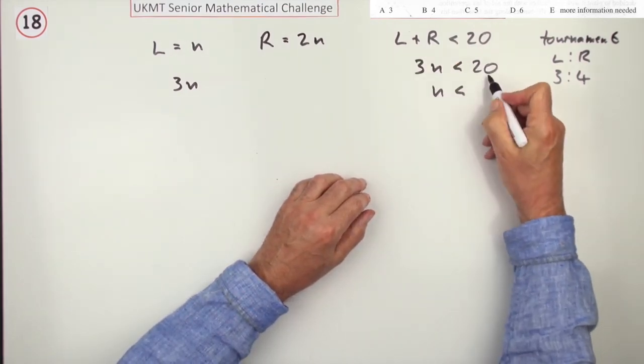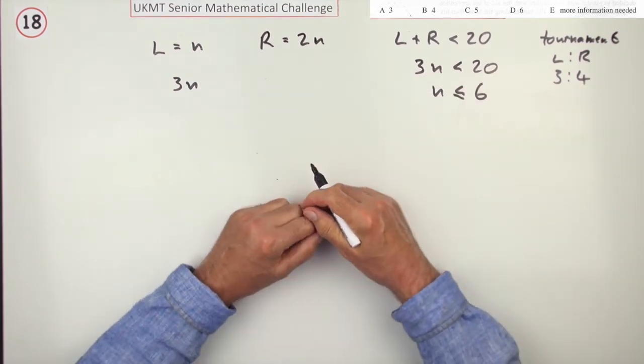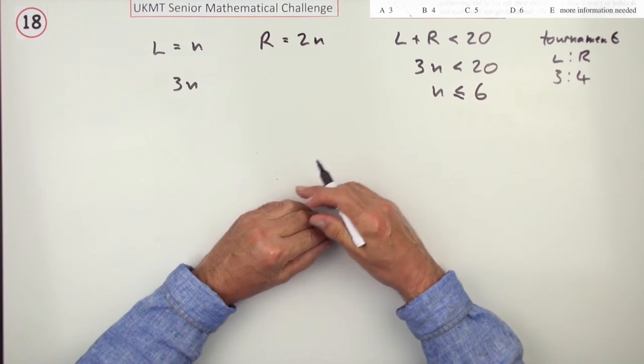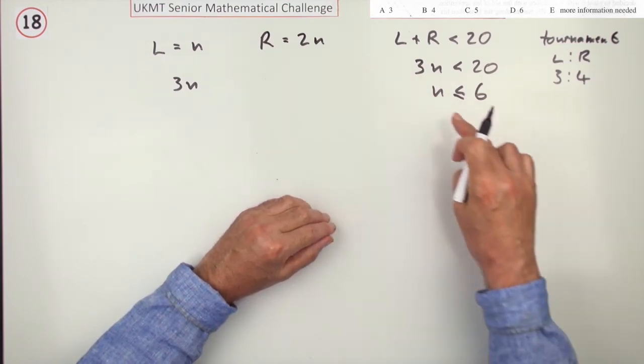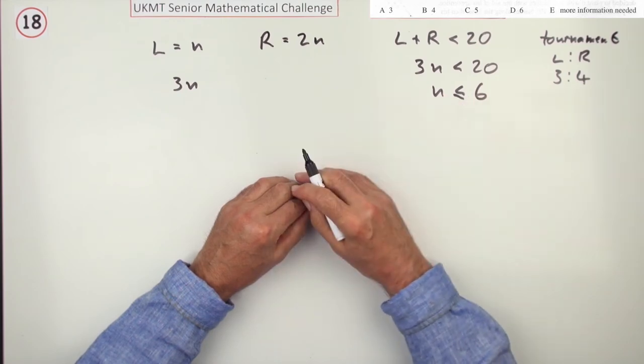So N must be less than 20 divided by 3, 6 and 2 thirds, so that's less than or equal to 6, so there's not that many players to begin with. If there was 6 left, there'd be 12 of them, 5 there'd be 10 and so on, you can even just enumerate those answers and do it purely numerically.